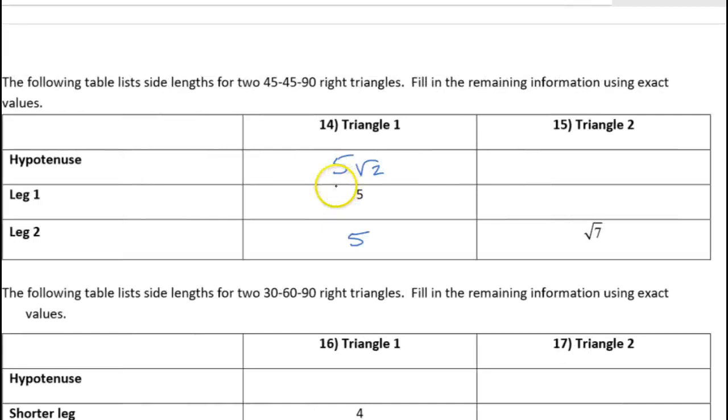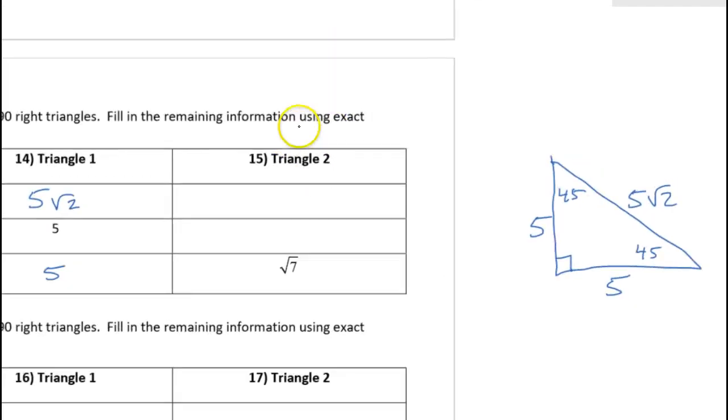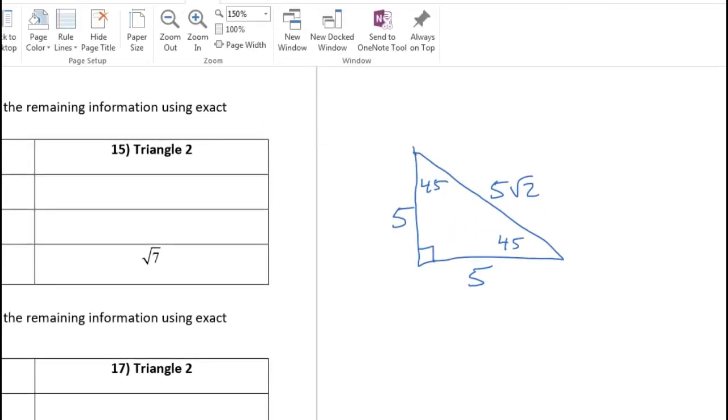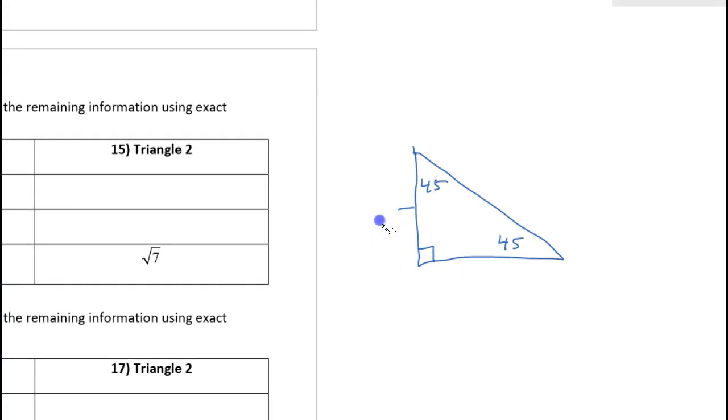Now for problem number 15, we're given that one of the legs is radical seven. So if one of the legs is radical seven, that means the other leg is radical seven as well because it's isosceles. And the hypotenuse should be radical seven times radical two. But radical seven times radical two is radical 14, and that can't be simplified, so we'll just leave it like that.